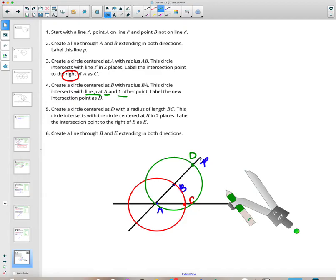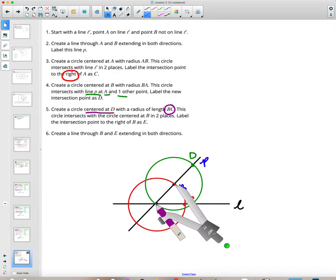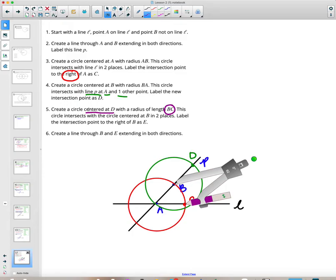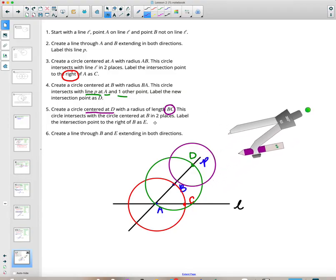Now, create a circle centered at D. Centered at D with a radius of BC. We need to open this compass to a length of BC. We need to set it on B and C. Now, we need to do a circle around D. Move this to D and draw a circle around D.